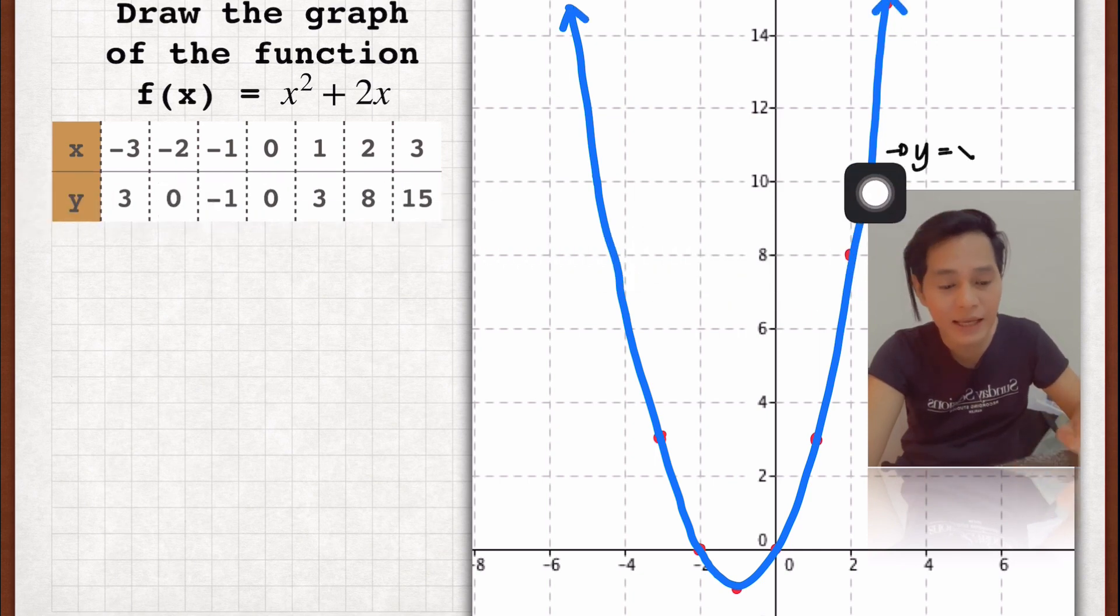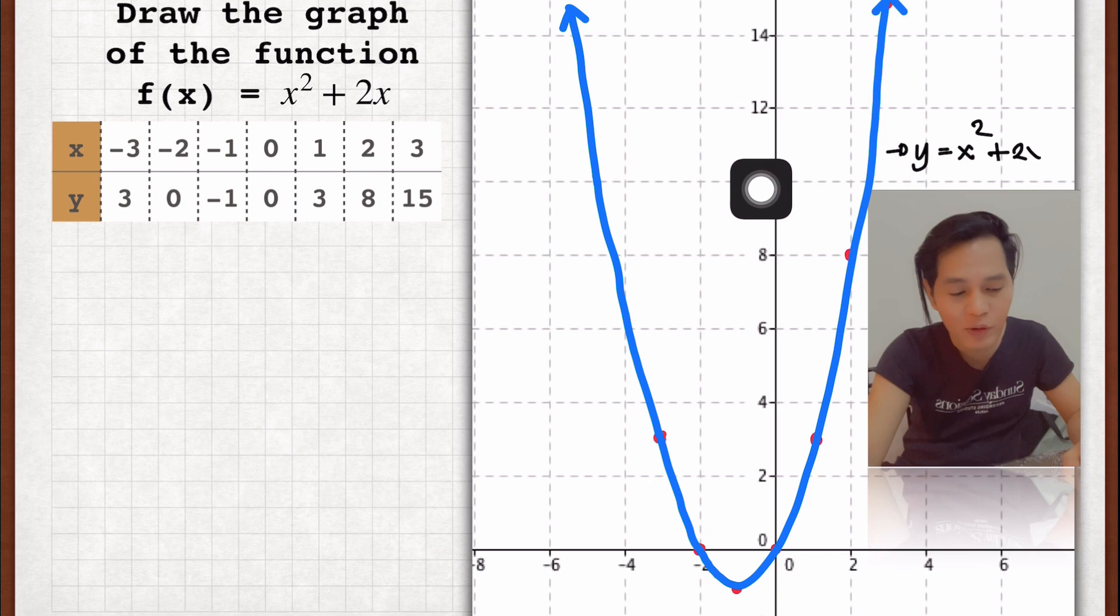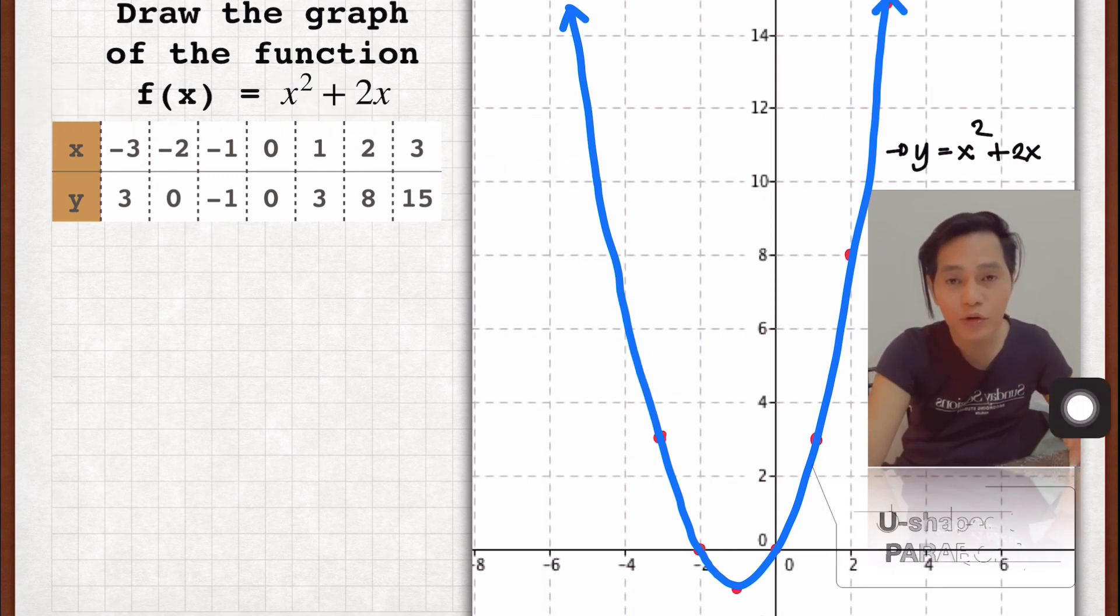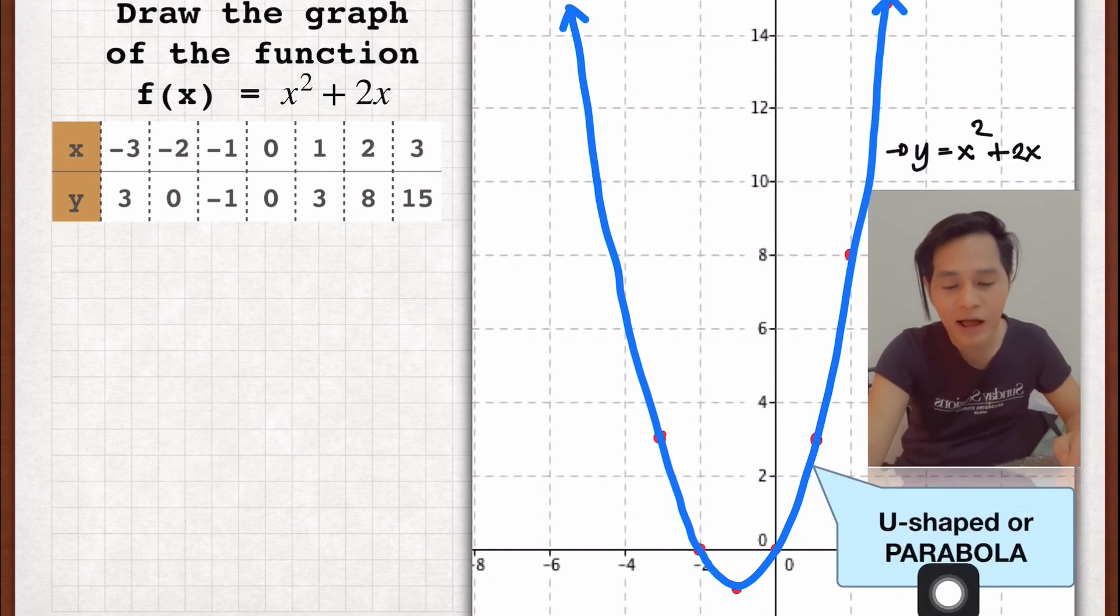After you plot the following points, then you connect them. So that's how it looks like. This is now the graph of a quadratic function, x squared plus 2x. Don't forget to label it. And then, this is now what we call a U-shaped or we also call it the parabola. So the graph of a quadratic function is a parabola or a U-shaped.